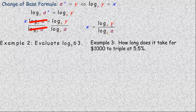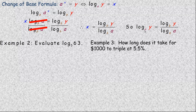So x equals the logarithm of y base b divided by the logarithm of a base b. Looking back at what we had at the beginning, this implies that the logarithm of y base a equals the logarithm of y base b divided by the logarithm of a base b. It's the logarithm of the argument divided by the logarithm of the base. It's most convenient to use base 10 because your calculator does base 10, though the ln key will also give you the same calculation.